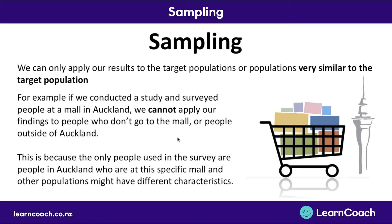In an exam they might ask: what's an issue with applying these findings to the general population of Auckland? The issue is that the people at the mall in Auckland might have different characteristics — a different gender, age range, or ethnicity — compared to people who aren't at the mall. So you can't apply your findings outside of that context, because people at the mall would be an unrepresentative sample of all people in Auckland.